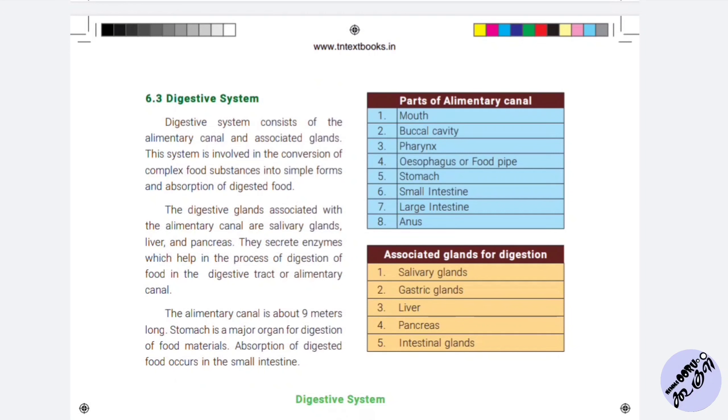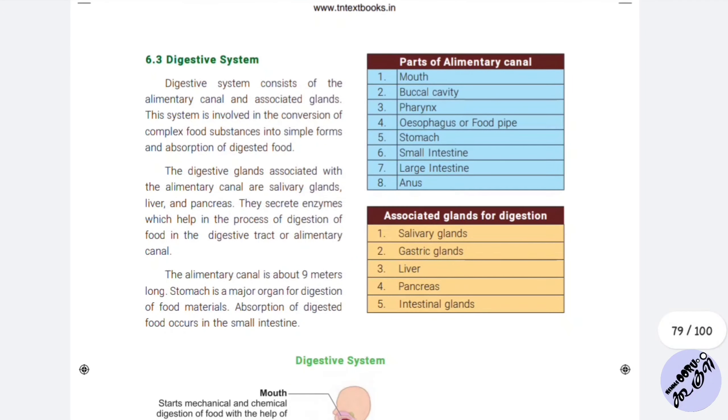6.3 Digestive System. The digestive system consists of the alimentary canal and associated glands. This system is involved in the conversion of complex food substances into simple forms. Food molecules break down into simple forms.